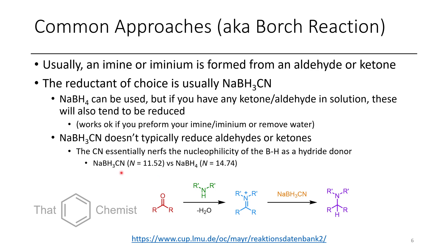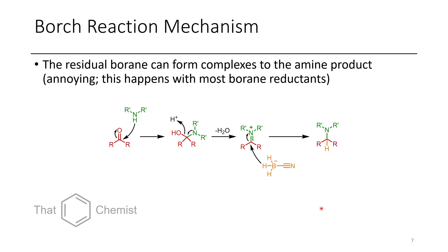The mechanism is: first we form the iminium through loss of water, the borohydride acts as a hydride donor, and that reduces it to a secondary amine. If you're doing this practically, if you have any boron-containing material present it'll often form complexes with the nitrogen, so you have to do chromatography or distillation to remove them — although washes with base can also help, because hydroxide forms a borate complex which is more stable than the nitrogen-boron complex in most cases.